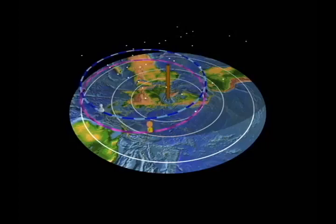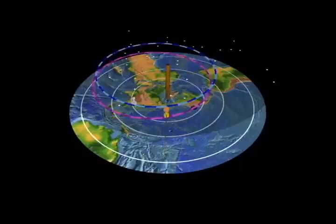This makes sense in the planisphere interpretation, where the nakshatras serve as a clock face, and the sun, moon, and planets are like the hands of the clock.